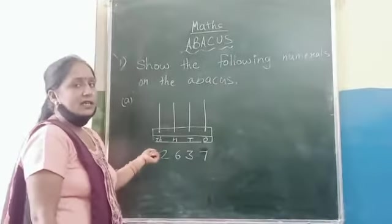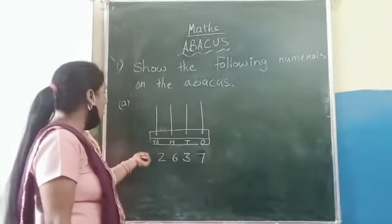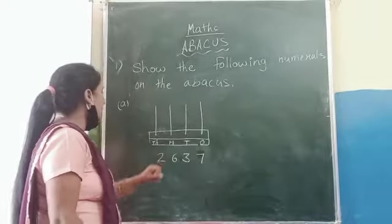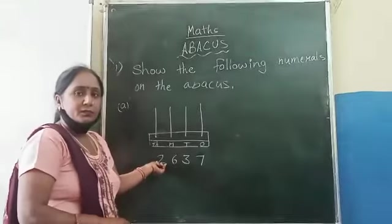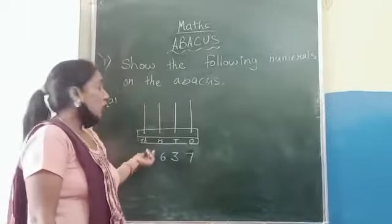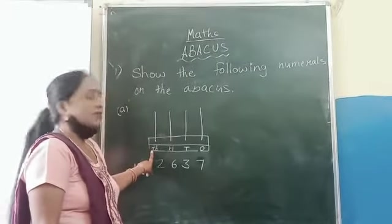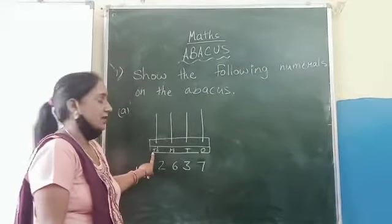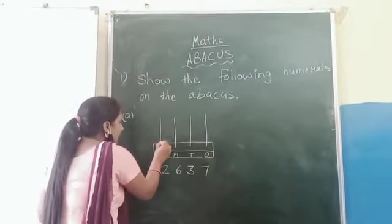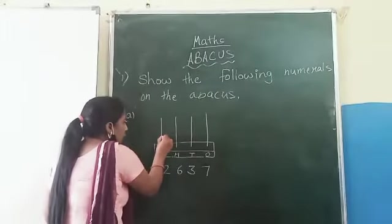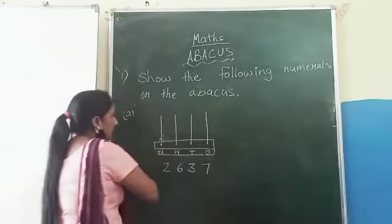Now how do we write it on the abacus? 2 is in the 1000 place. There are 2 beads in the 1000 place. So we write 2 beads.